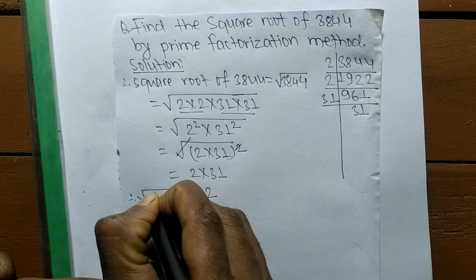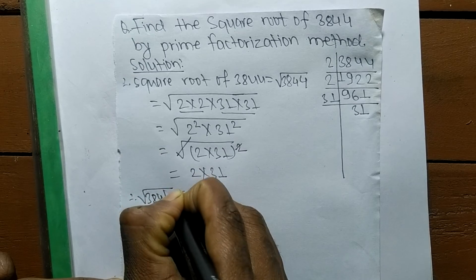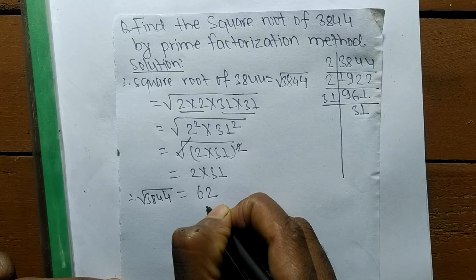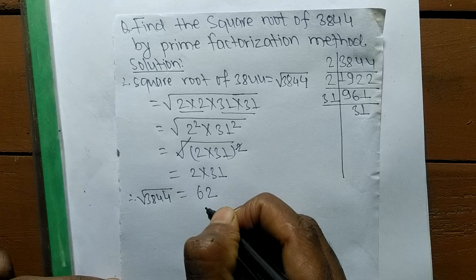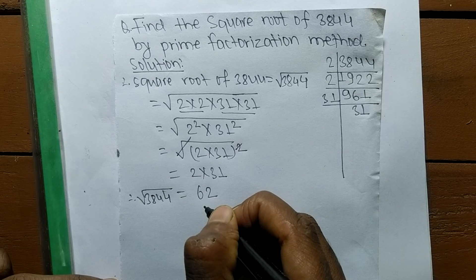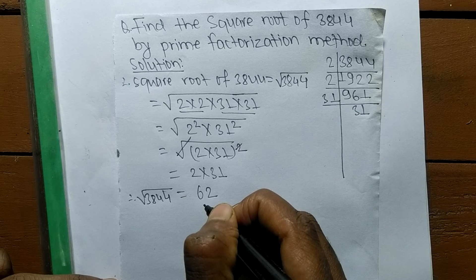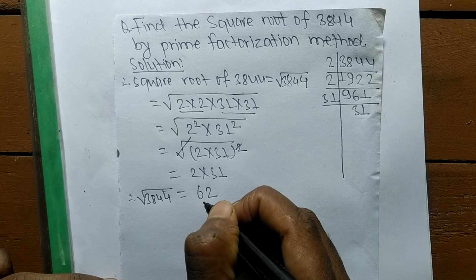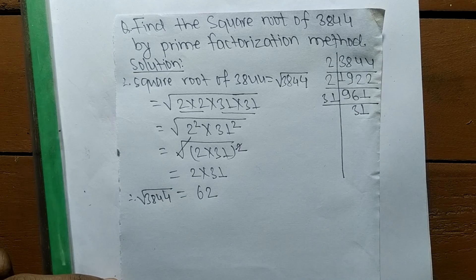Therefore the square root of 3844 is 62. So this much for today, and if you have any question related to math and science, then just comment your question in the comment below and we shall provide a video solution of your question. Thank you.